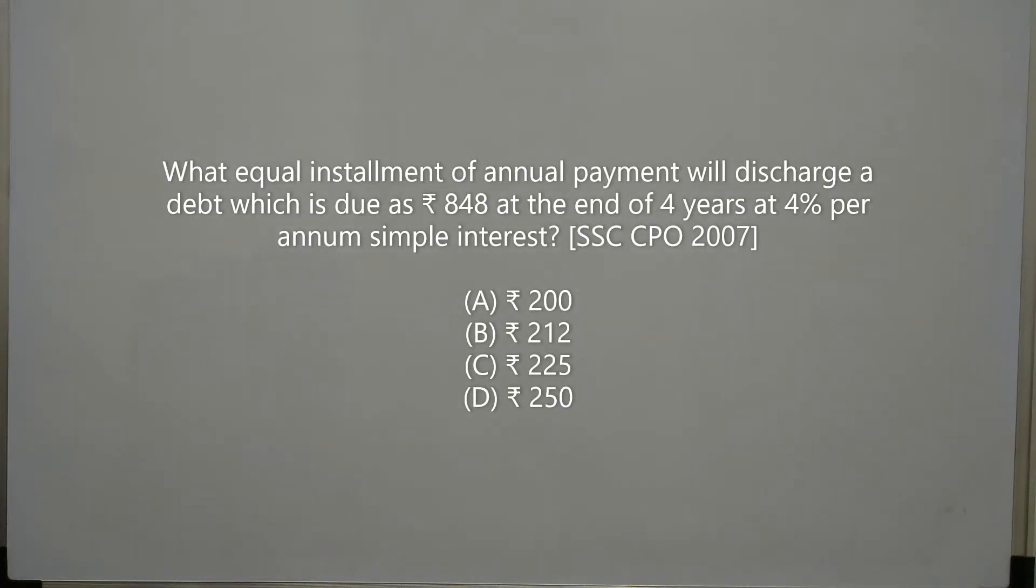What equal installment of annual payment will discharge a debt which is due as ₹848 at the end of 4 years at 4% per annum simple interest? So this is again a problem of simple interest and EMI.